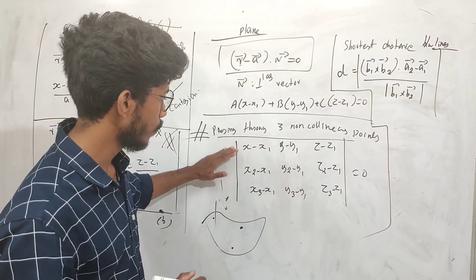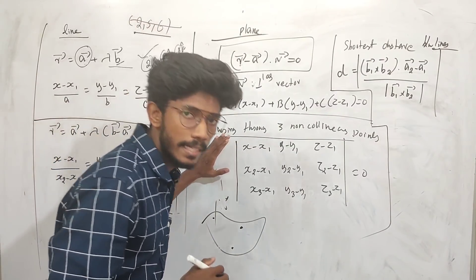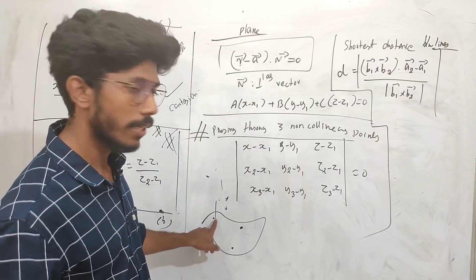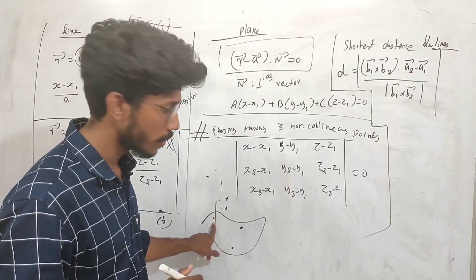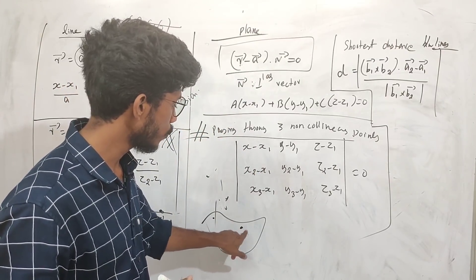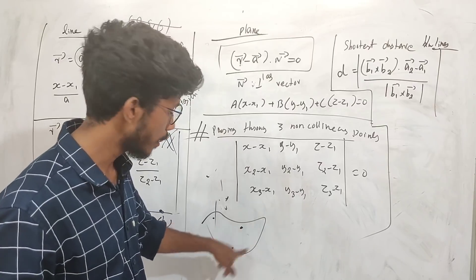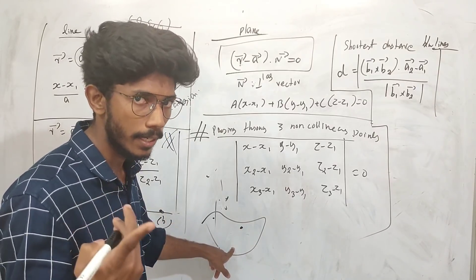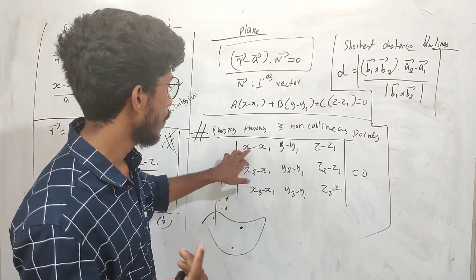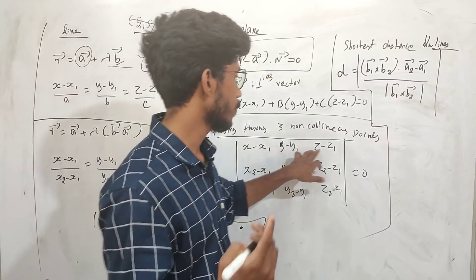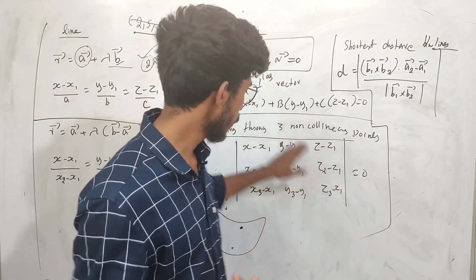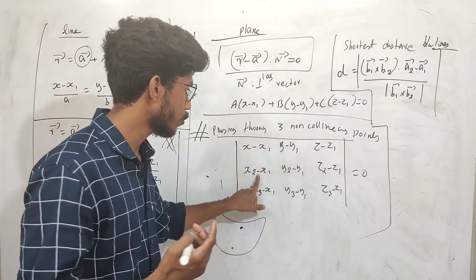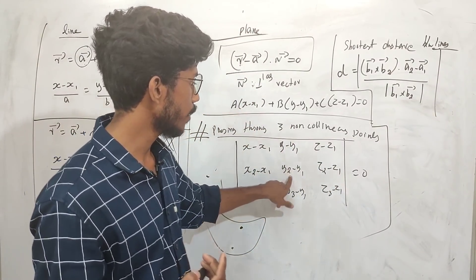If you have three non-collinear points (x1, y1, z1), (x2, y2, z2), and (x3, y3, z3), the formula for the plane is the determinant: | (x−x1), (y−y1), (z−z1) | | (x2−x1), (y2−y1), (z2−z1) | | (x3−x1), (y3−y1), (z3−z1) | = 0.